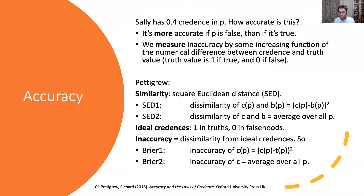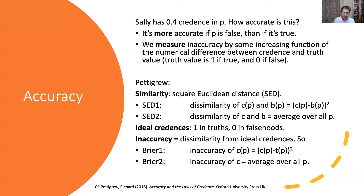First of all, to introduce the notion of accuracy: we have agent Sally, she's got 0.4 credence in P, and we want to have some kind of take on how accurate this credence is. A few things about this — it's more accurate if P is false than if P is true. It would be even more accurate given that P is false if it was closer to zero. So here's a very natural proposal: we're going to measure accuracy by some increasing function of the distance between the credence and the actual truth value, where the truth value is 1 if the proposition is true and 0 if false.